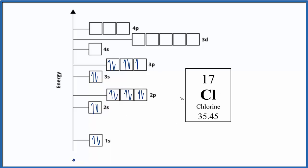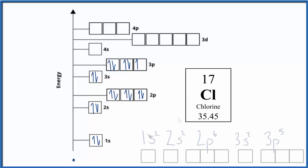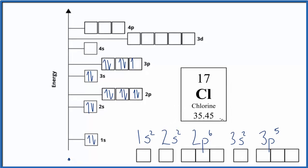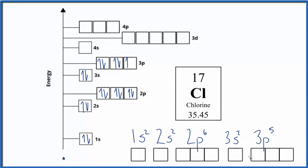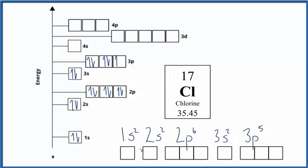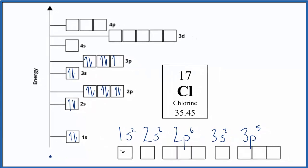If we wanted to write the electron configuration that would look like: 1s² 2s² 2p⁶ 3s² 3p⁵. And for that orbital diagram in the linear fashion, we'd have the same arrangement shown linearly.